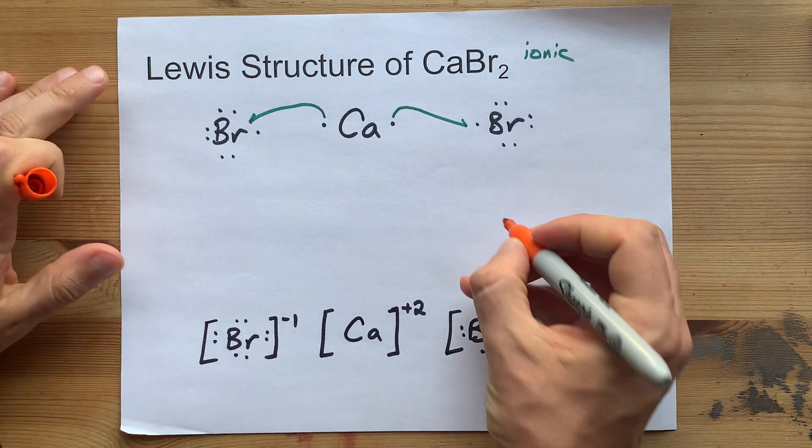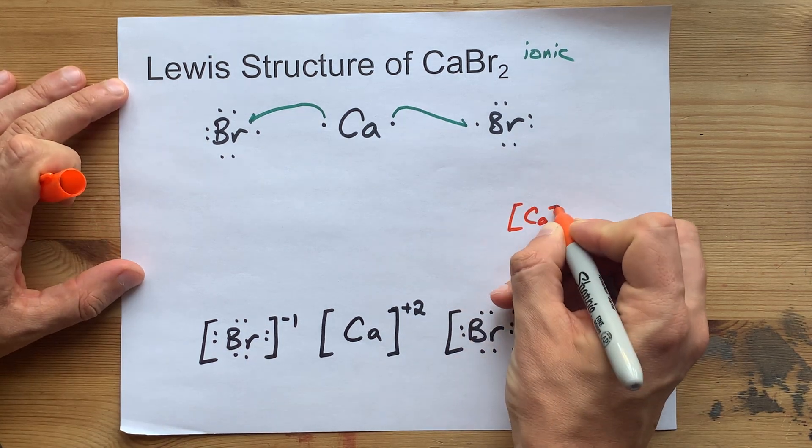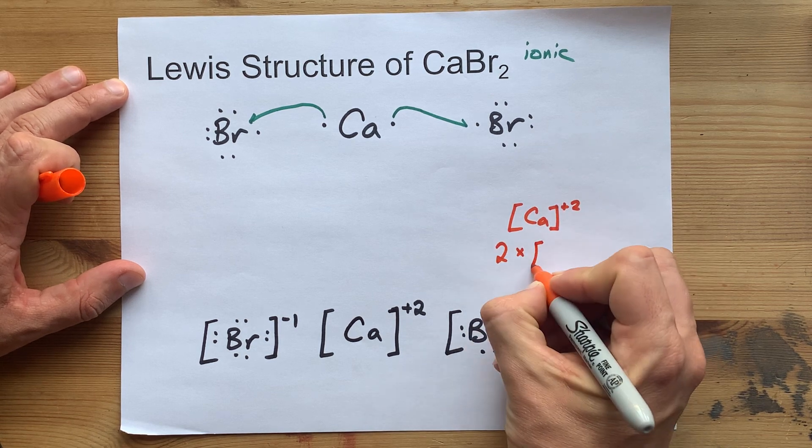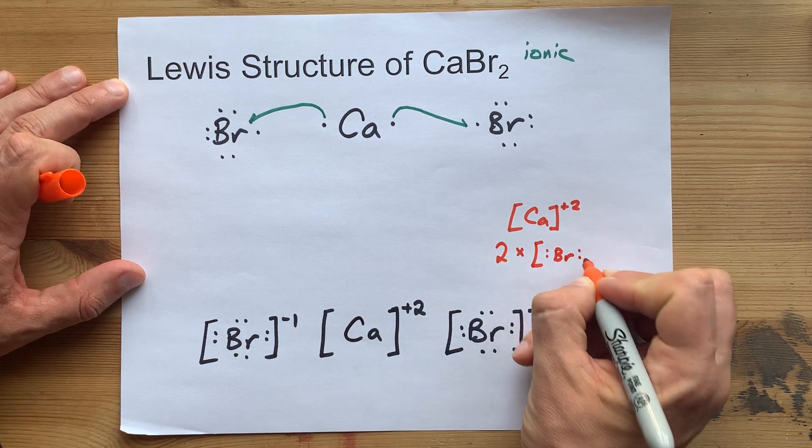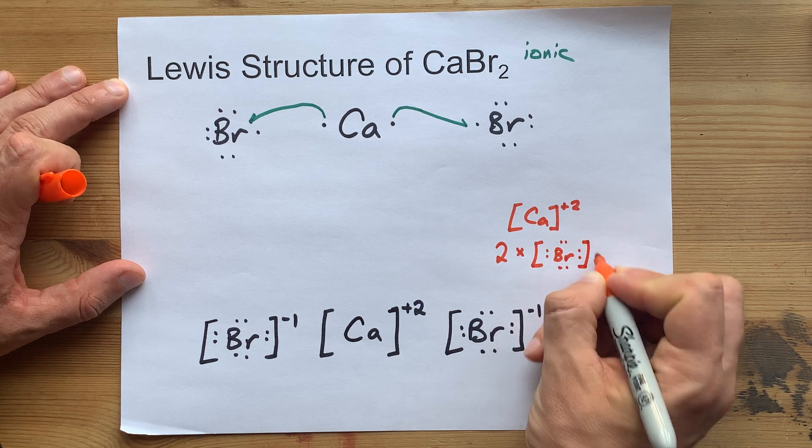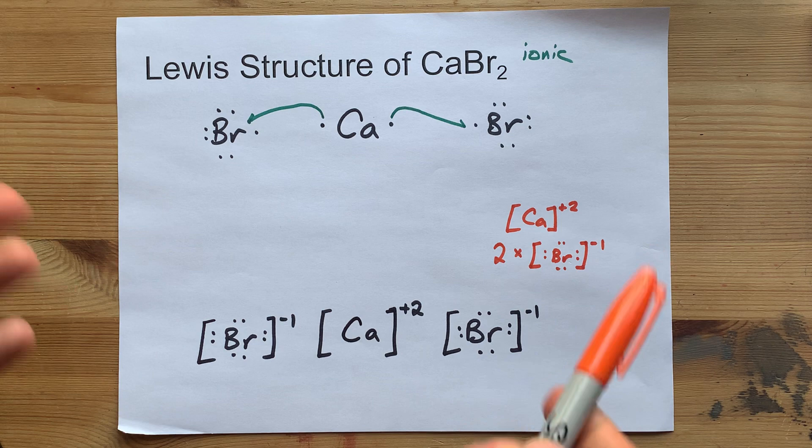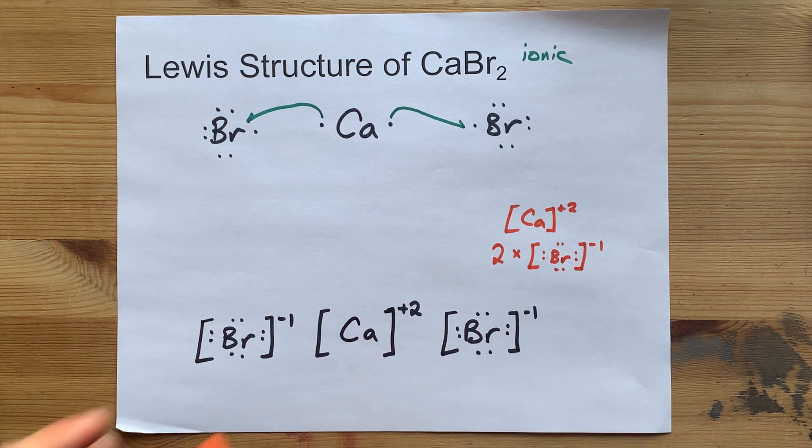You might get away with drawing the calcium with the plus two charge and then doing two times one of those bromines. Some teachers will let you take that as a shortcut, so you don't have to write that out so many times. But, hey, I prefer this one. It's kind of symmetrical.